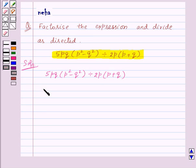So this will be equal to 5pq into p square minus q square upon 2p into p plus q.